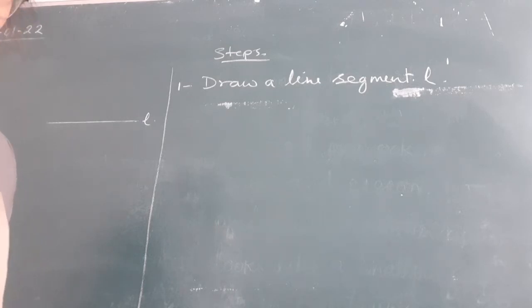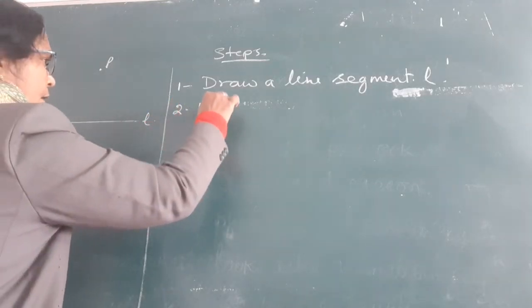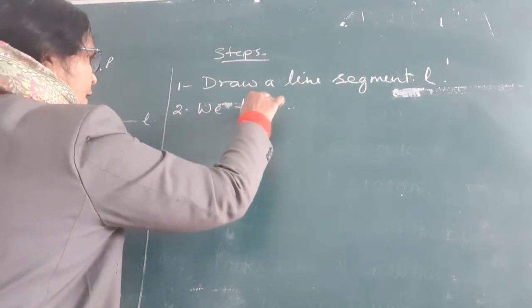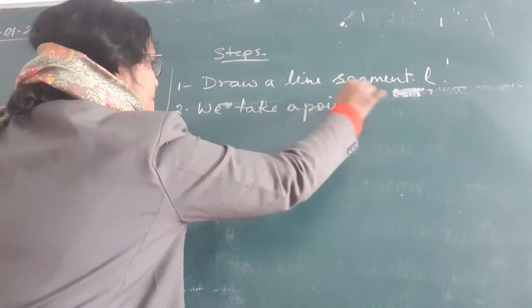Now, in the second step, we take any point. You can call it P, Q, whatever you want. So, you take any point P outside the line. So, in the second step, we take a point P.